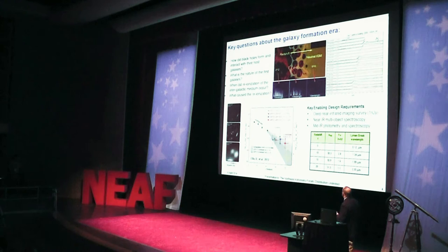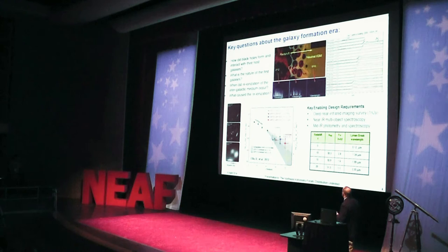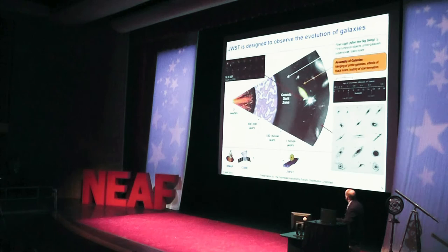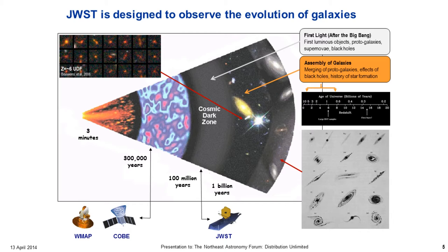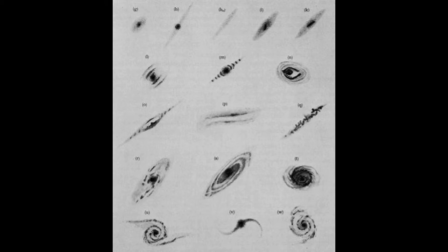JWST is also designed to observe the evolution of galaxies from their first formation. The shapes of galaxies we see around us today — spiral galaxies, some with bars, some with bulges — are familiar. But when we look at high-redshift, very old galaxies, they don't look like this. They look all beaten up, with a morphology astronomers call irregular. We'd like to understand how that irregular morphology turned into the regular morphology we see today.